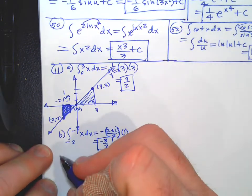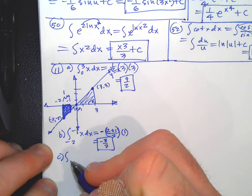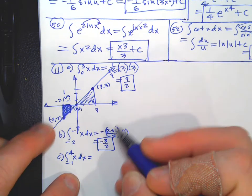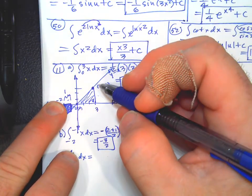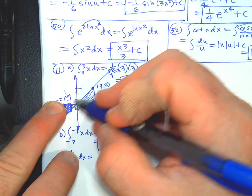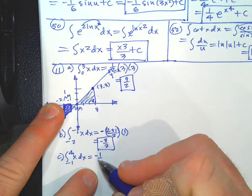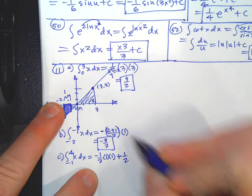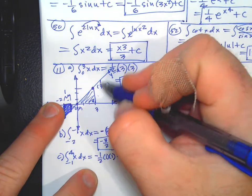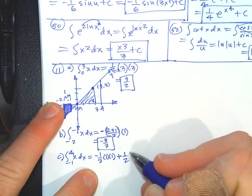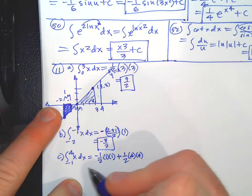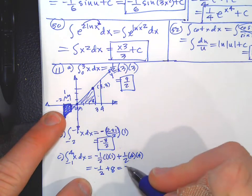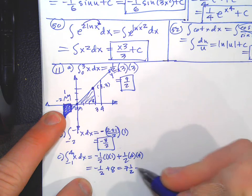Part c integrates from -1 to 4. From -1 to 0 is a small triangle below the x-axis: negative one-half times base times height equals negative one-half. From 0 to 4 is a bigger triangle above the axis: the base is 4 and the height is 4, so that's 8. Combined: negative one-half plus 8 equals seven and a half, or fifteen-halves.